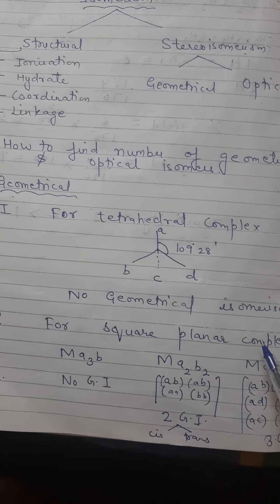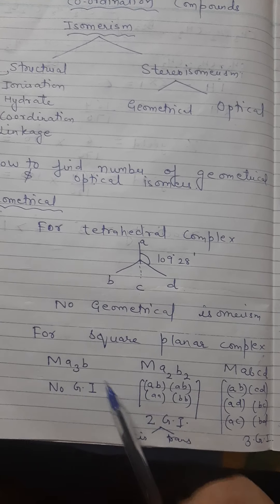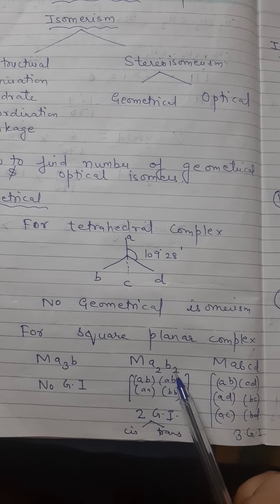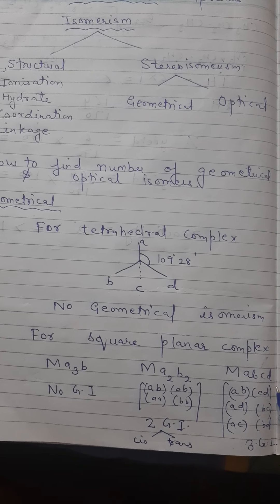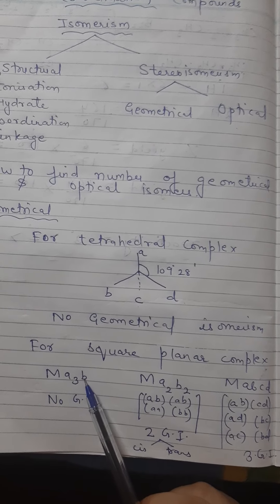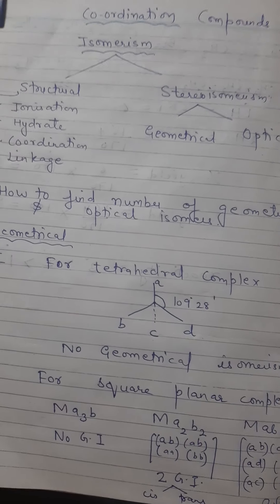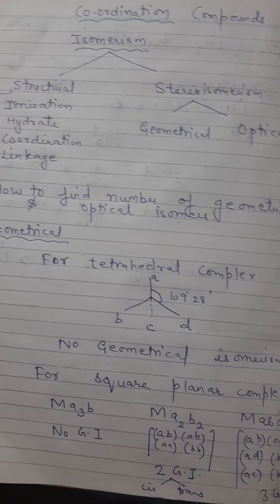For square planar complex, we can have MA3B, MA2B2 complex, or MABCD complex for geometrical isomers. Now, if I make a detailed structure, I am going to tell you a trick for that.